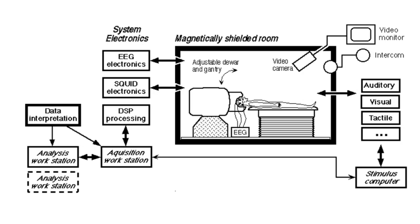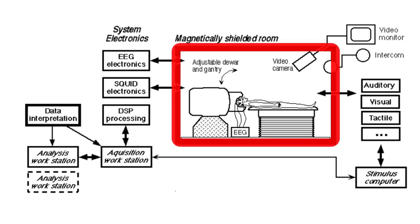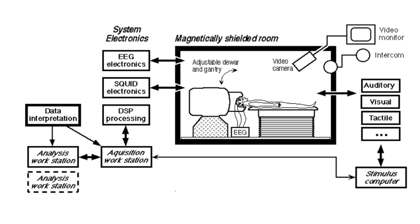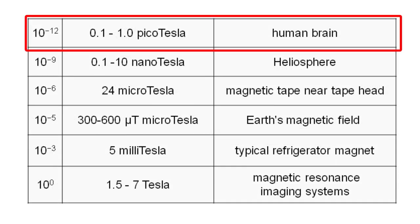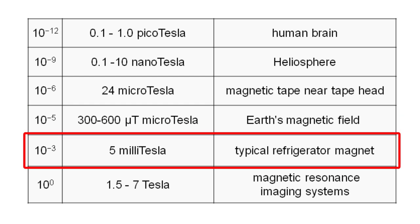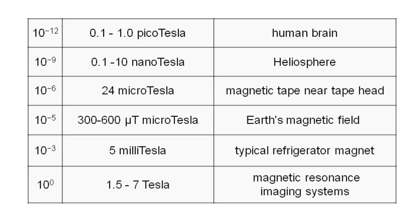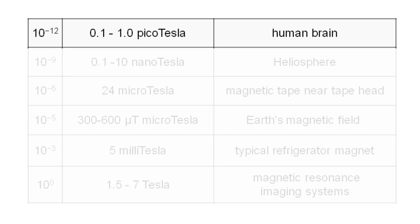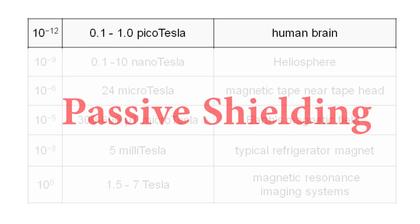We can zoom out even further, and if we do that, we can see that the MEG system is placed in a magnetically shielded room, or MSR as we call it. All devices that might generate magnetic fields are placed outside of it to reduce interference with the measurements. As we said, the magnetic fields are extremely small. They are about a million times smaller than the earth's magnetic field, which by itself is already about a hundred times smaller than your typical refrigerator magnet. We therefore need the MSR to keep out these interfering magnetic fields. We call this passive shielding.